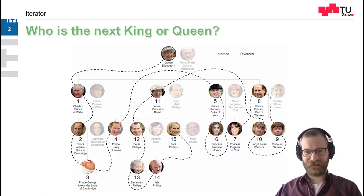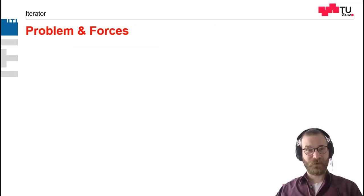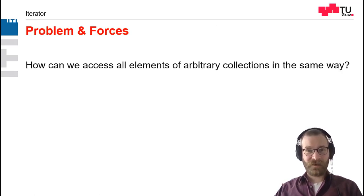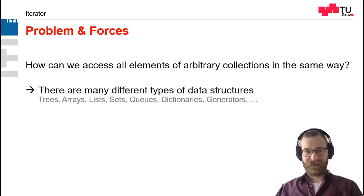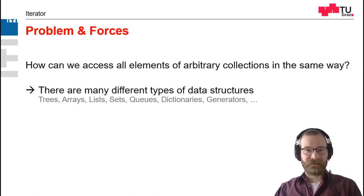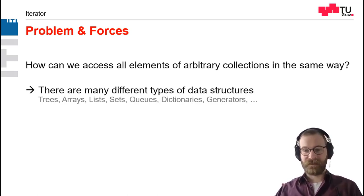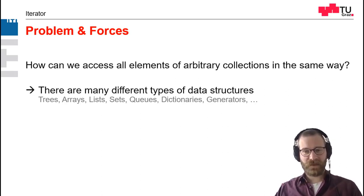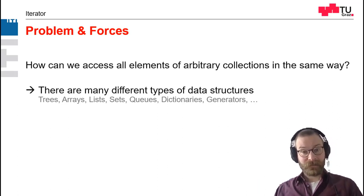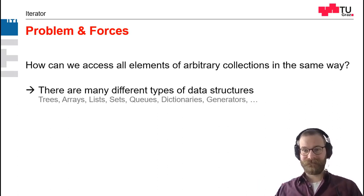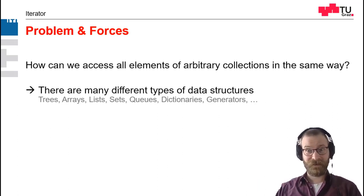Getting the next element out of a data structure isn't that easy. Now let me come to the actual problem of the iterator. How can we access all elements of an arbitrary collection in the same way? There are different kinds of collections such as trees, arrays, lists, sets, queues, dictionaries, and so on. Each and every one of these data structures has different means of how to access elements, and some don't even have an order. Sets don't have an order. Dictionaries don't have an order per definition.